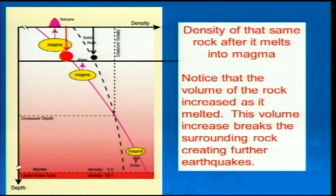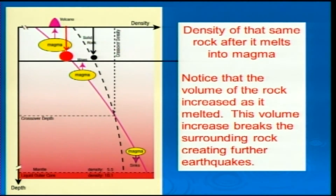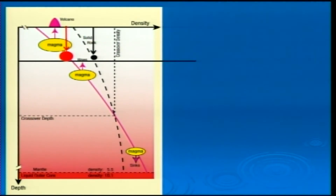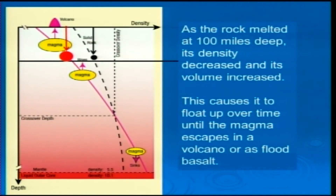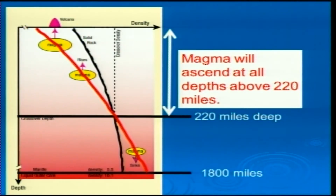When it moves over to the left, it becomes bigger — the red dot is bigger than the black dot, its volume increased. So just like that ball, it's going to go from here to bigger and want to float up. As the rock melted at 100 miles deep, its density decreased and its volume increased. From that day on, that magma is trying to find its way to the top. Magma will ascend at all depths above 220 miles by the laws of physics.